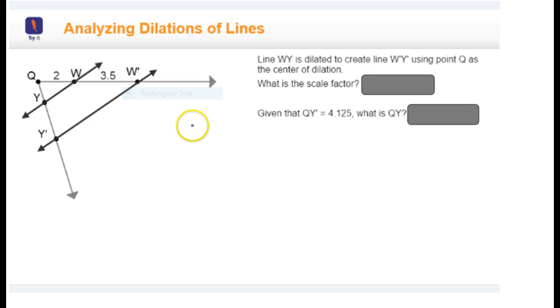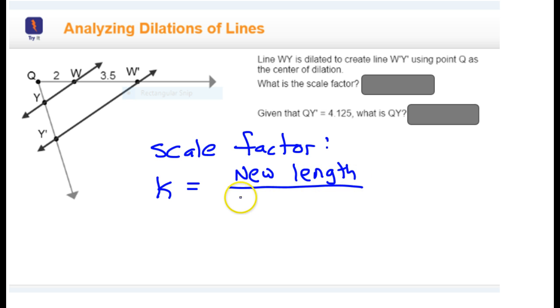This is a quick tutorial video on dilations of lines. A key concept that you're going to run into is the concept of scale factor. I like to use the letter K to represent the scale factor. Now an easy way to find the scale factor, depending on what information you're given, is that the scale factor is always going to be the new length, or distance, divided by the old length.